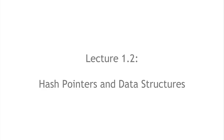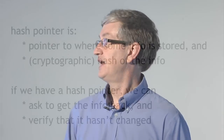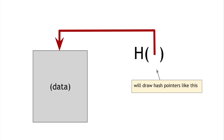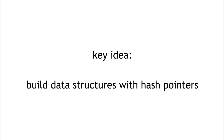In section 1.2, we're going to talk about hash pointers and their applications. A hash pointer is a data structure that combines a pointer to where some information is stored with a cryptographic hash of that information. Whereas a regular pointer gives you a way to retrieve the information, a hash pointer also lets you verify that the information hasn't changed. So a hash pointer tells us where something is and what its value was.